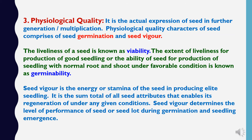The third seed quality is physiological quality. It is the actual expression of seed in further generation or multiplication. Physiological quality characters of seed comprise seed germination and seed vigor. The liveliness of a seed is known as viability. The extent of liveliness for production of good seedling, or the ability of seed to produce a seedling with normal root and shoot under favorable conditions, is known as germinability. Seed vigor is the energy or stamina of the seed in producing elite seedlings. It is the sum total of all seed attributes that enables its regeneration under any given conditions, and determines the level of performance of seed or seed lot during germination and seedling emergence.